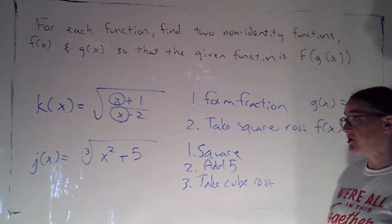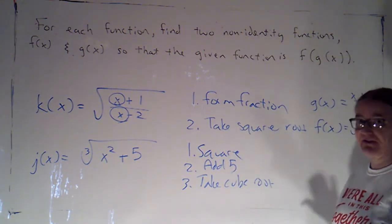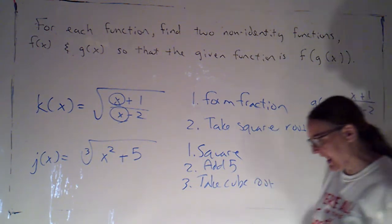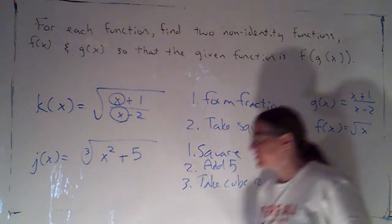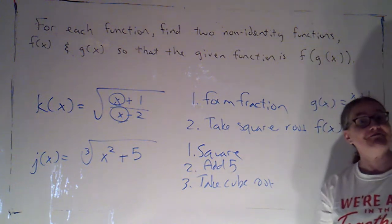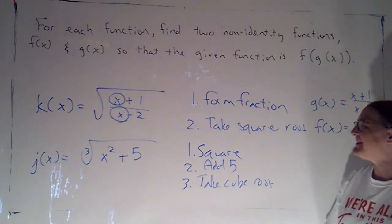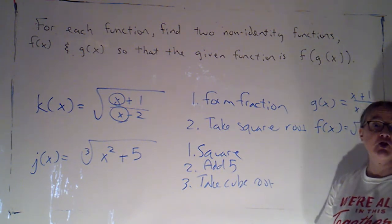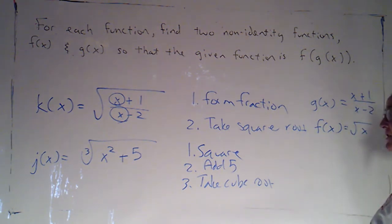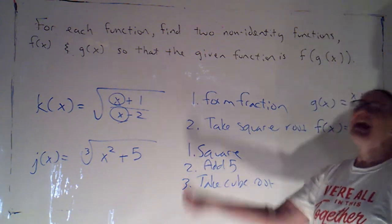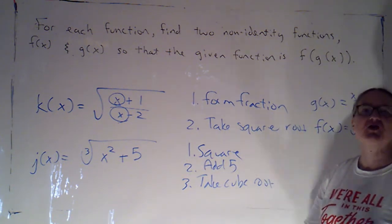I could, if I wanted to, easily write this as a composition of three functions, where the first function would be the squaring function, the second would be the function that tells me to add 5, and the third function would be the function that tells me to take the cube root. But that's not what the directions say. The directions say to write this as a composition of two functions. So, if I want to accomplish three things, one of my functions is going to have to accomplish two of those things, and the second function will accomplish just one of those things.